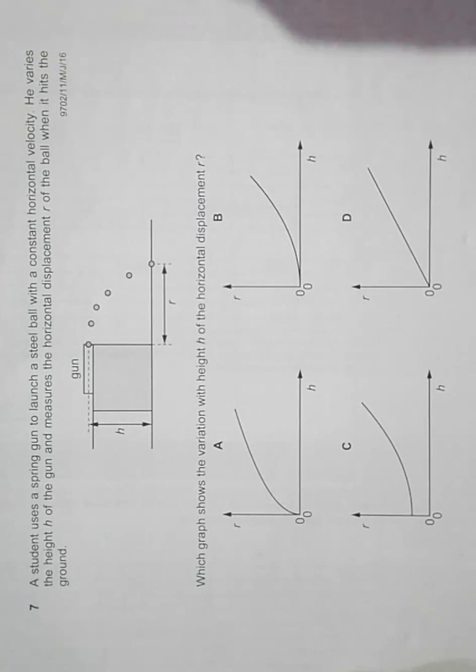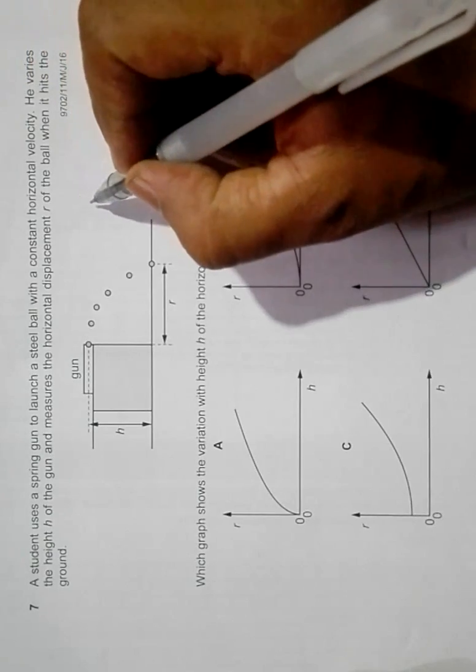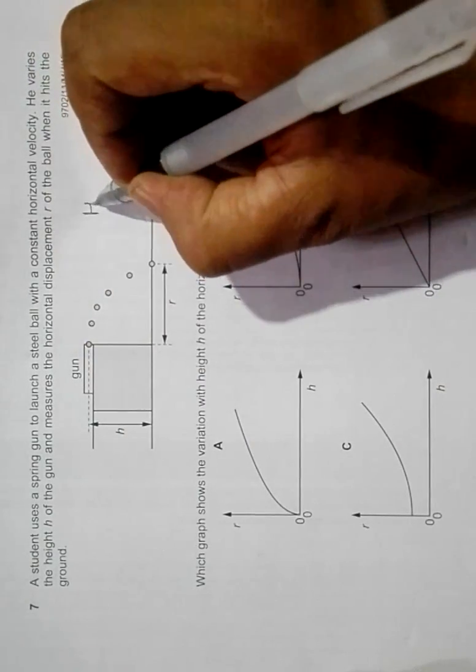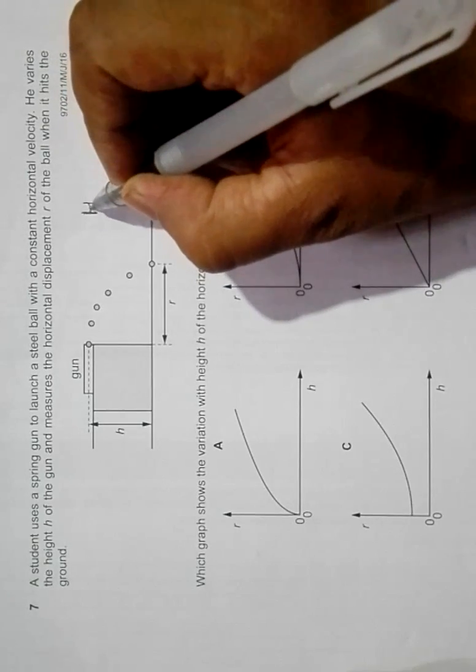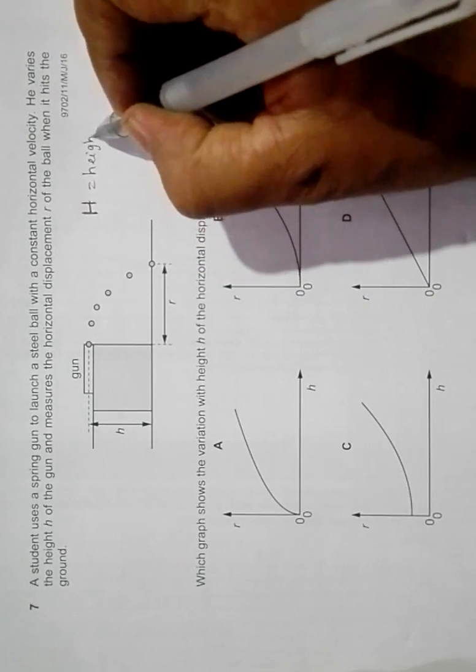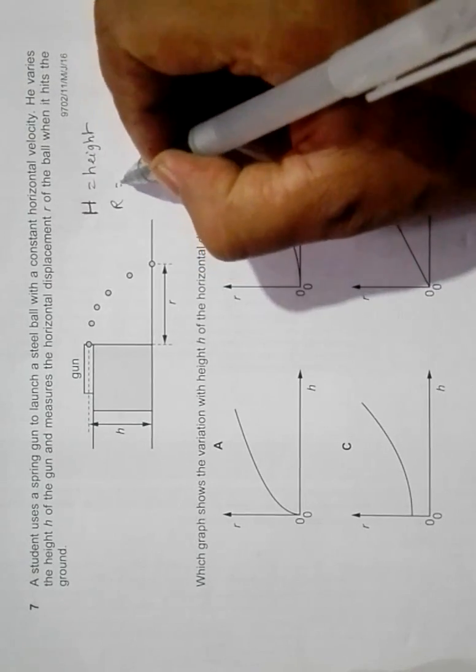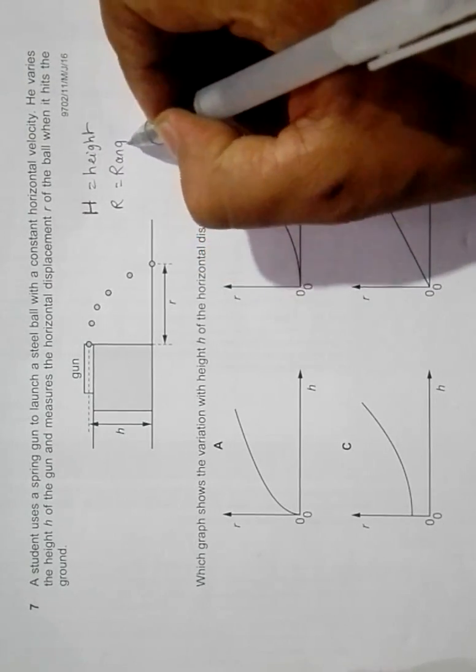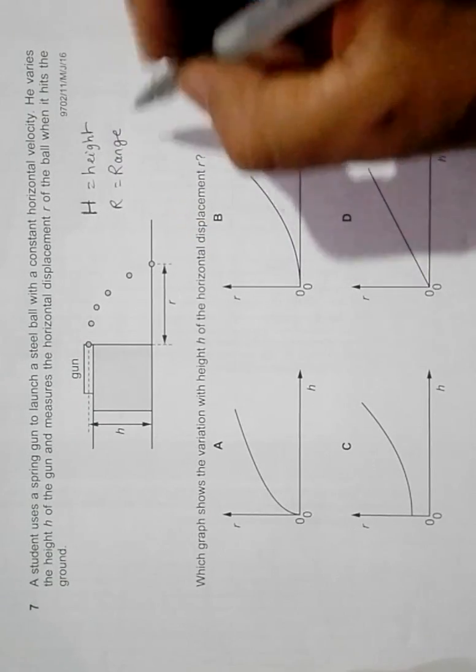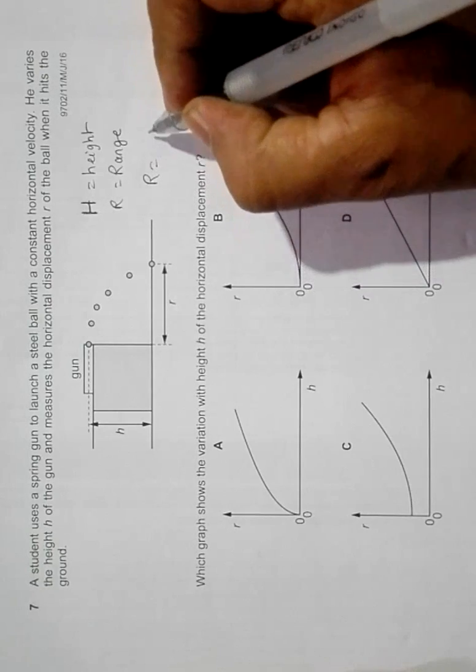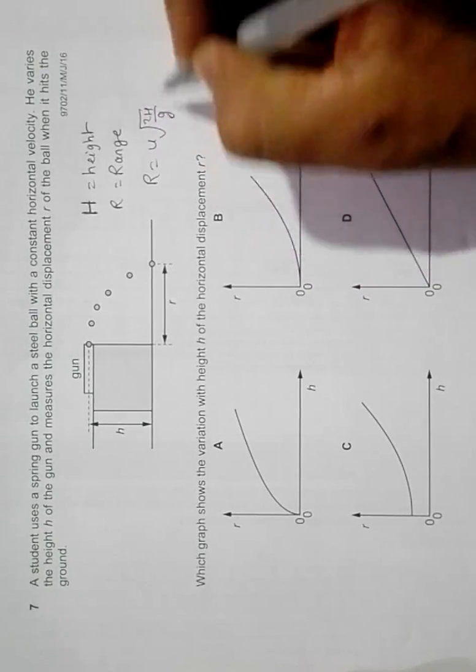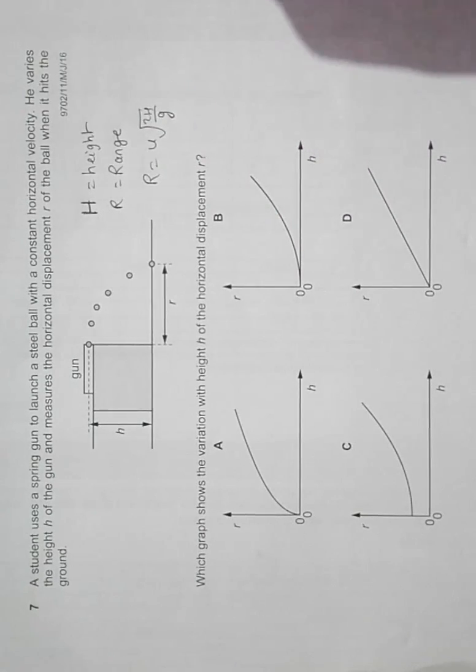If we go through the formula, we have a formula in the theory of projectile motion. h is the height in the formula, and r is the range. The range is related to the height as r equals u times root of 2h by g. u is the velocity of firing.